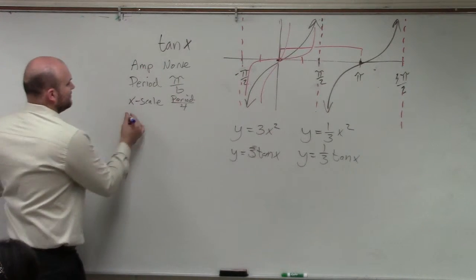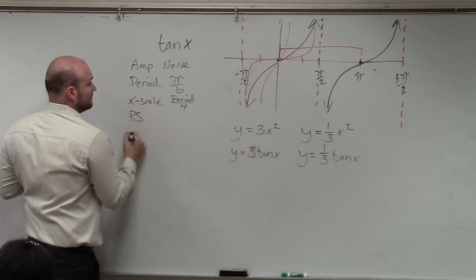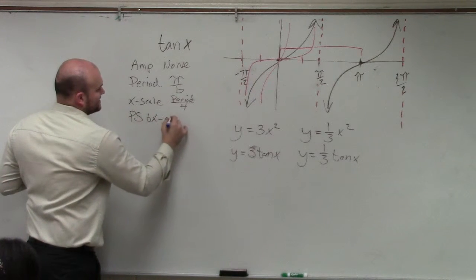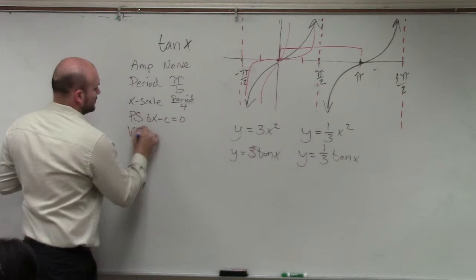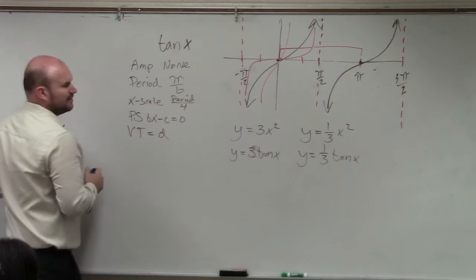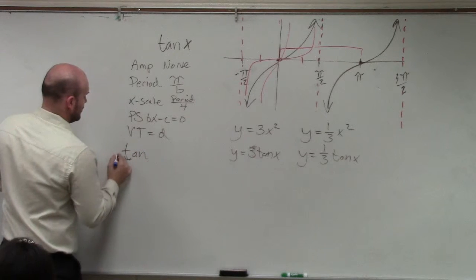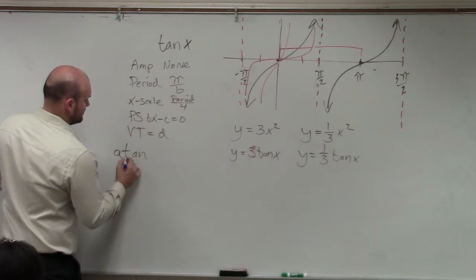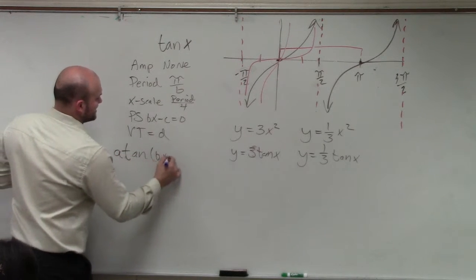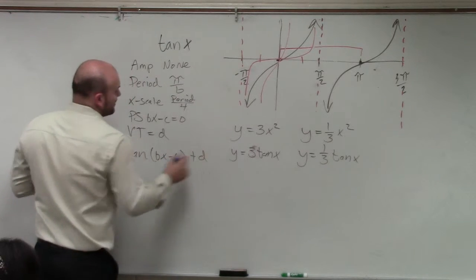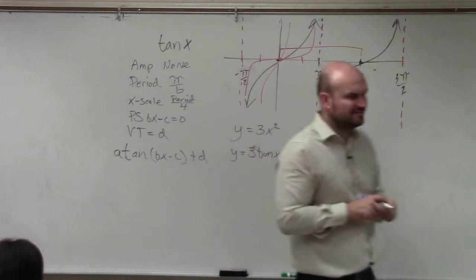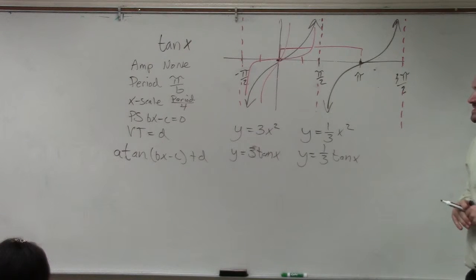You have your period. Phase shift is still going to be bx minus c equals 0. Vertical transformations equal to d. Where am I getting all these again? Tangent or a. Tangent of bx minus c plus d. So do you guys see how the transformation, the equation is exactly the same?